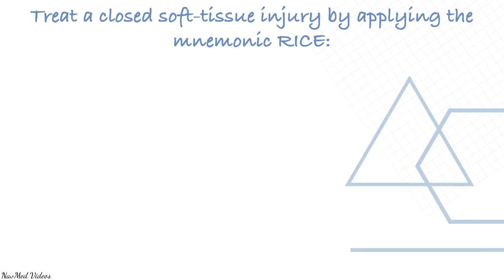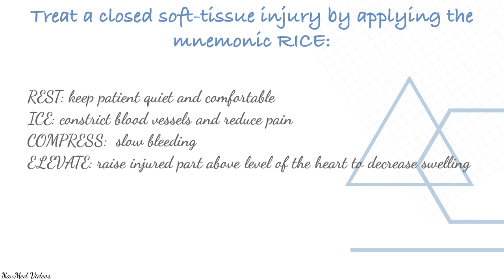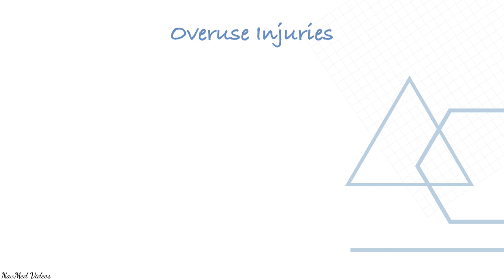Treat a closed soft tissue injury using the RICE mnemonic: R is Rest — keep the patient quiet and comfortable; I is Ice — constrict blood vessels and reduce pain; C is Compress — slow bleeding; E is Elevate — raise the injured part above the level of the heart to decrease swelling. Remember: swelling hurts and delays healing time.